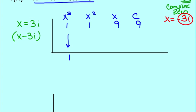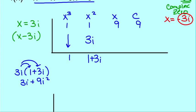So we bring down the 1, multiply 1 times 3i, and we get 3i. Add the column. 1 plus 3i is 1 plus 3i. Now here's where you may want to go off to the side. We want to multiply 3i times 1 plus 3i. So we distribute, and we get 3i plus 9i squared. If you remember i squared, i squared can be replaced with a negative 1. So we have negative 9 plus 3i.